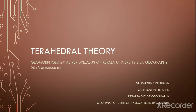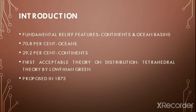Let's look into the tetrahedral theory. We all know that almost 70.8% of the total surface area of the earth is represented by oceans and approximately 29% by the continents. There are several hypotheses with regard to the origin of oceans and continents, and the first acceptable scientific theory was the tetrahedral hypothesis proposed by Lothian Green in the year 1875.